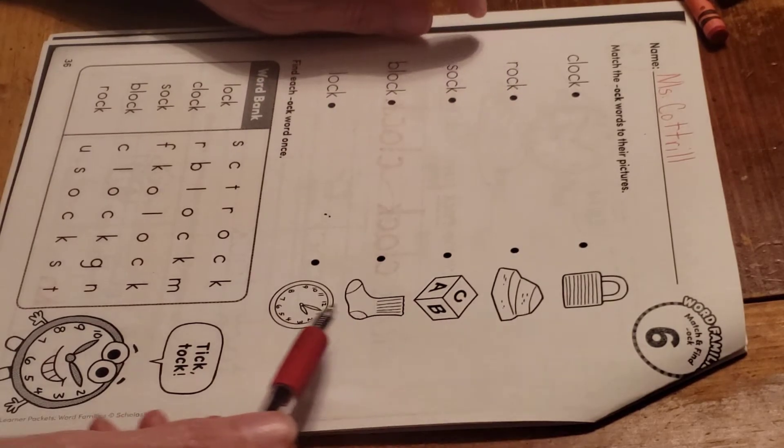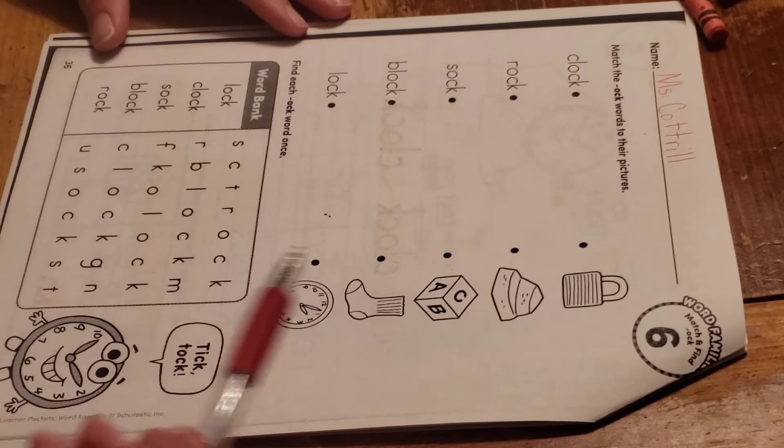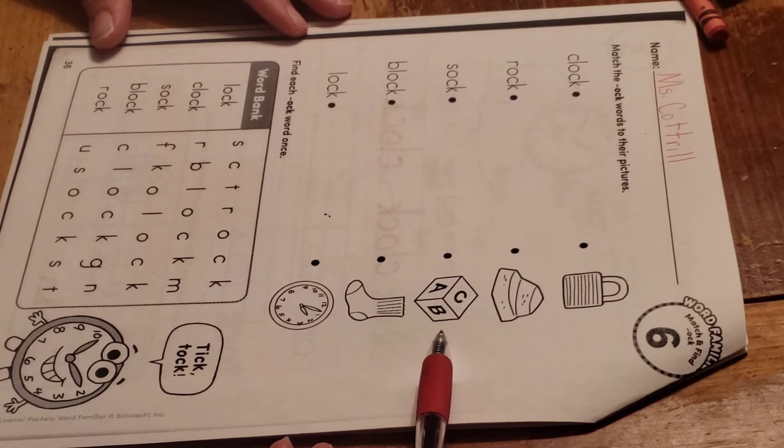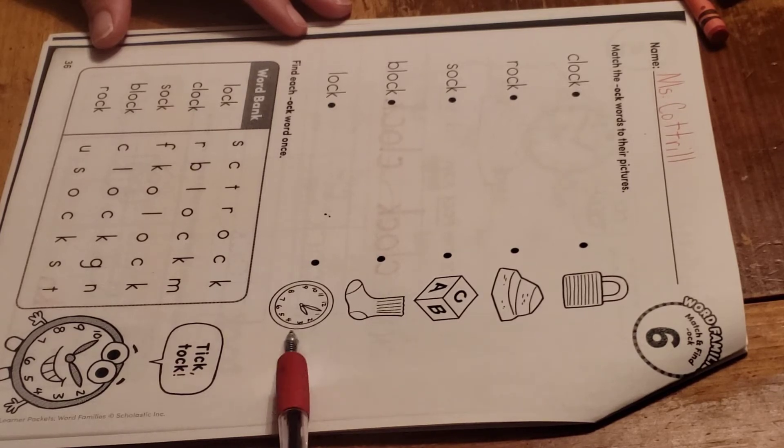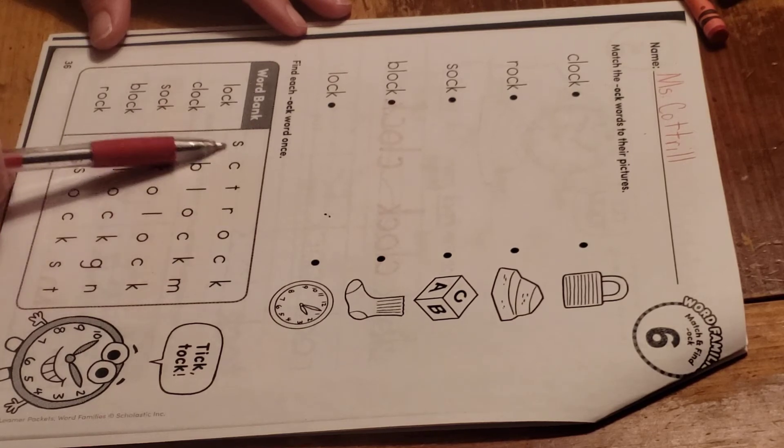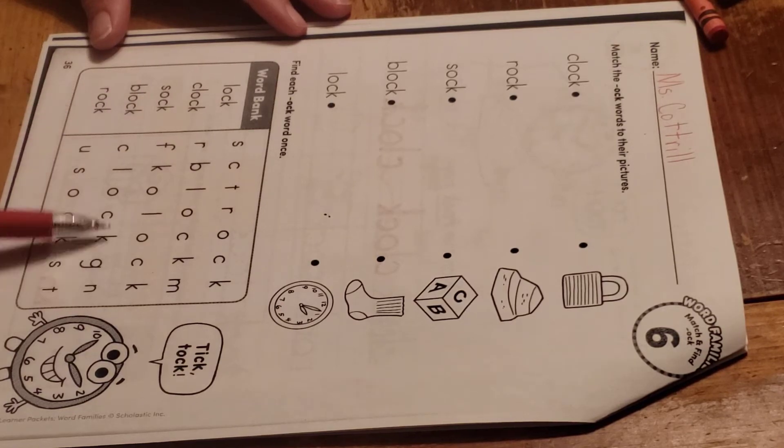Okay, we have a lock, a rock, a block, a sock, and a clock. Down here we're doing our search and find words. Here's your word bank. All of these words are over here.